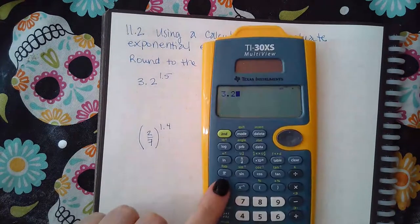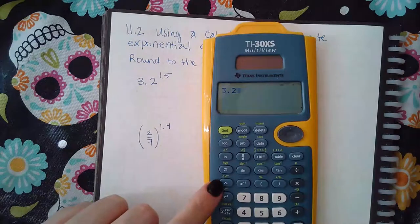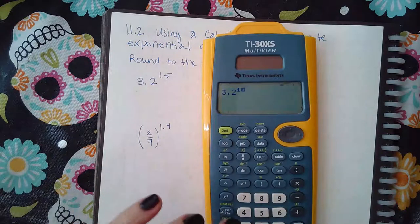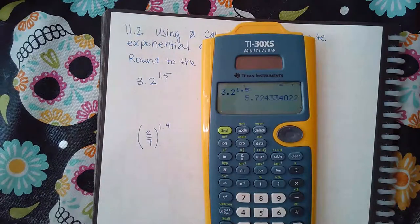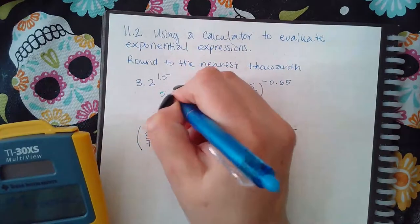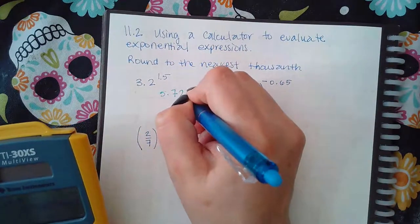You use the exponent button, which on my calculator looks like this. Different calculators are different; you definitely want to know where the exponent button is. Then it says round to the nearest thousandth, so this would be 5.724.